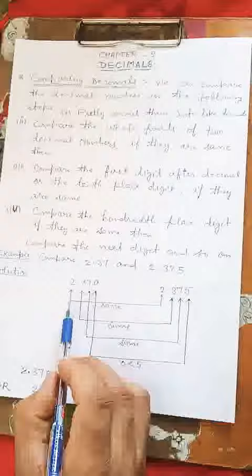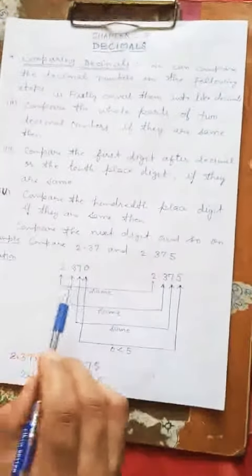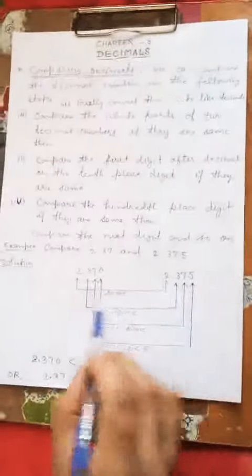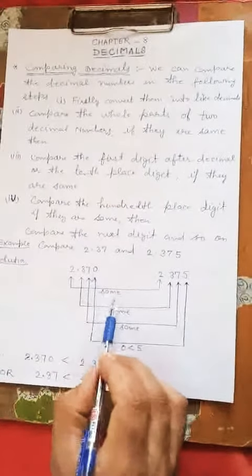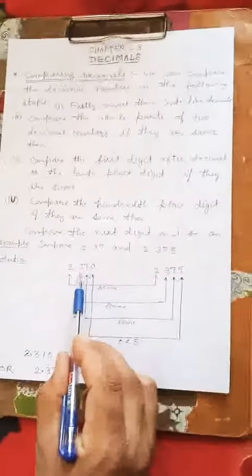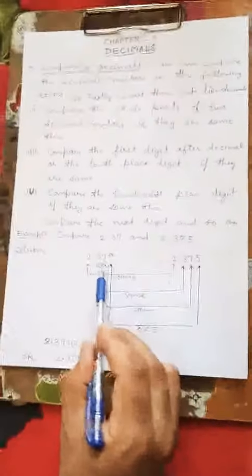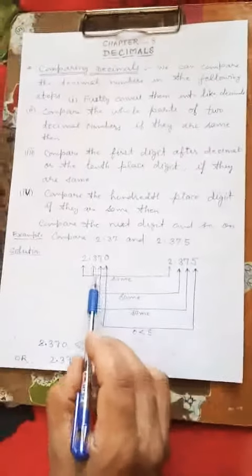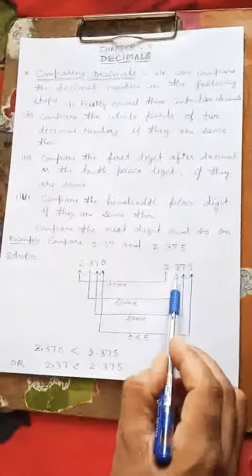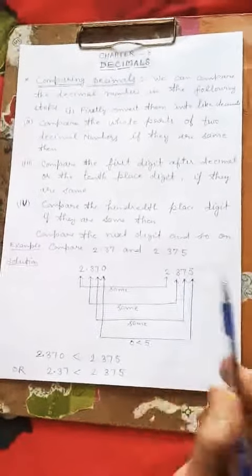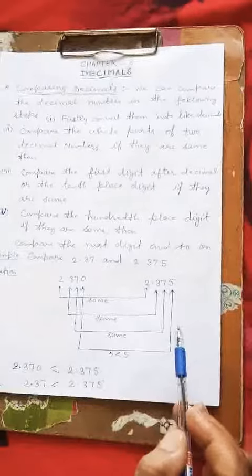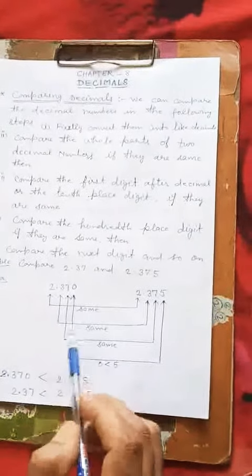It becomes 2.370 and the second number is 2.375. First of all, we compare the whole parts of these two numbers. Here the whole part is 2, and here it is also 2 — they are the same. Then we go to the next place, which is the tenth place. Here is 3, and in the second number here is also 3 — the tenth place digits are the same.